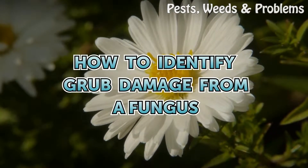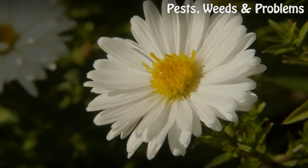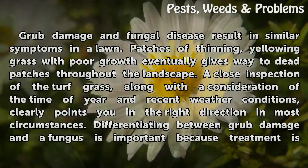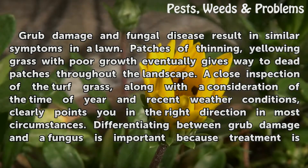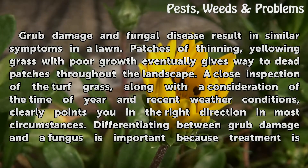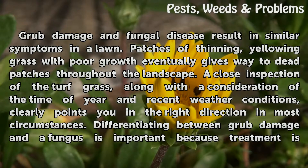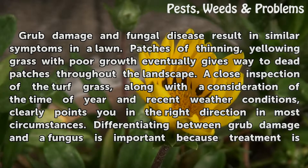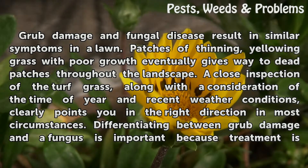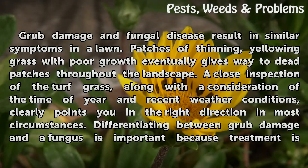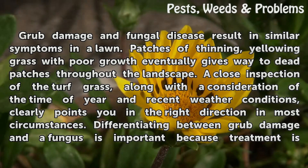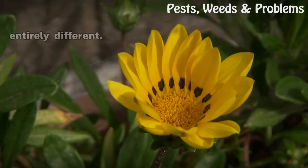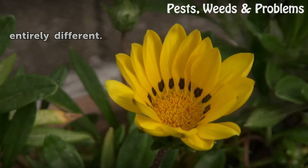How to identify grub damage from a fungus. Grub damage and fungal disease result in similar symptoms in the lawn — patches of thinning, yellowing grass with poor growth that eventually gives way to dead patches throughout the landscape. A close inspection of the turf grass, along with a consideration of the time of year and recent weather conditions, clearly points you in the right direction in most circumstances. Differentiating between grub damage and a fungus is important because treatment is entirely different.